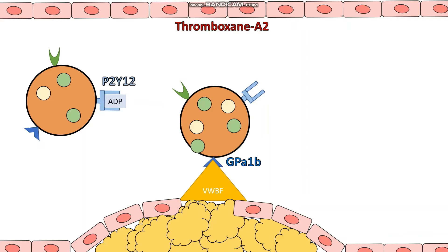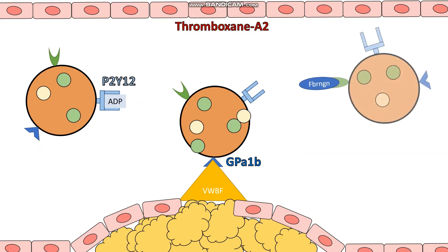And lastly we're going to have a look at these alpha granules in pink, which when they degranulate release things like von Willebrand factor, and as well as that they release fibrinogen, which goes and binds to the GP2B3A receptor on our platelets. In fact multiple platelets can bind to these molecules of fibrinogen, really helping to form a strong stable plaque.